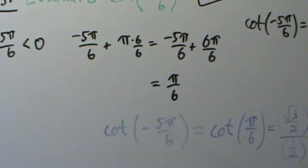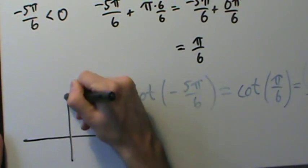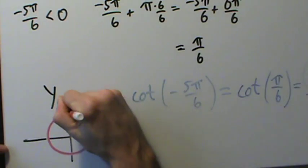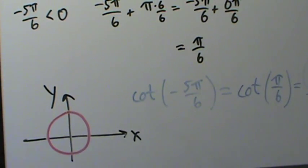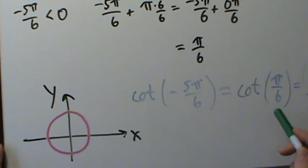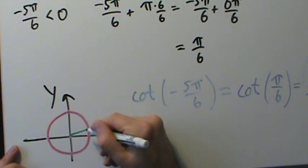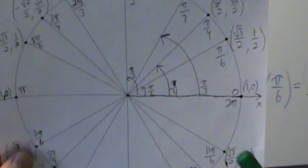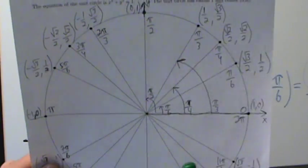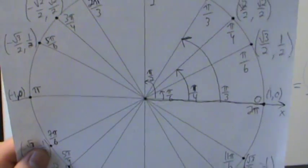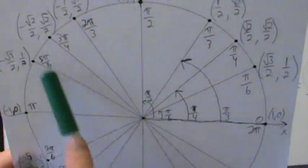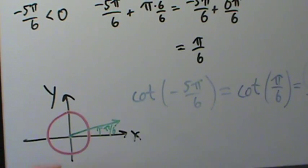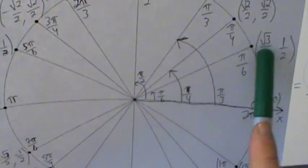Let's draw a picture of these angles on the unit circle. Cotangent has period π, so the angles won't be coterminal — unlike sine and cosine where the period was 2π and the angles were coterminal. π over 6 is about here on the unit circle. Negative 5π over 6 is the same rotation in the opposite direction, ending up down here.